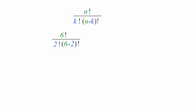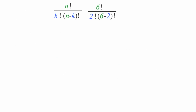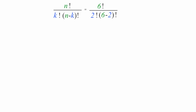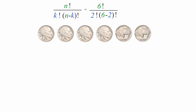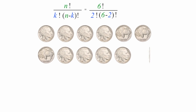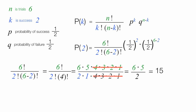Just so you're clear, this is combinations — I'll put a link to a video on combinations below. What this says is, if I flip a coin six times, there are 15 different ways I can get exactly two tails.